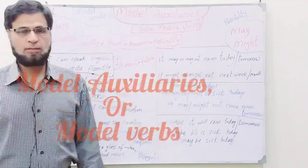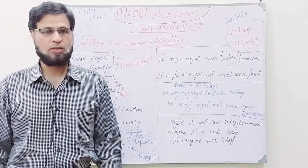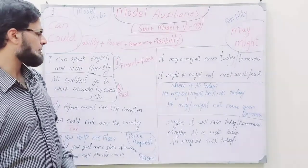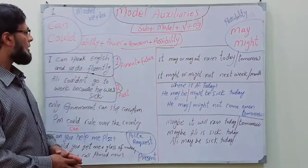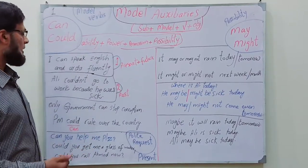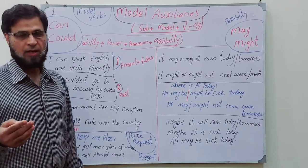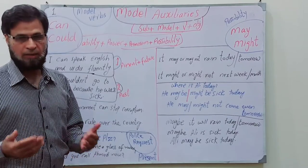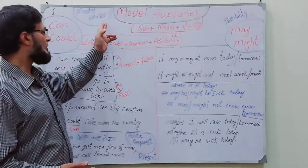Bismillah, Assalamu Alaikum dear viewers and respectable students, welcome back to our English language channel. Today I'm going to teach you about modal auxiliaries or modal verbs. We are going to learn about: can, could, may, might, will, shall, would, should, ought to, must — these are modal verbs or auxiliaries.